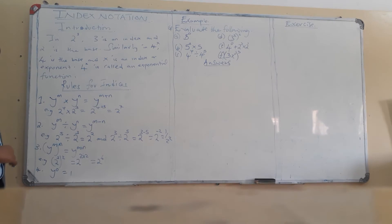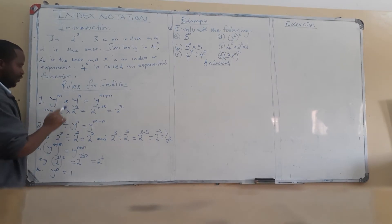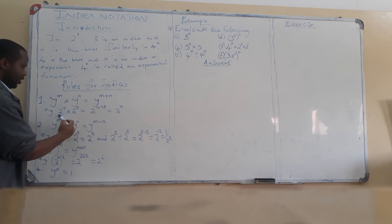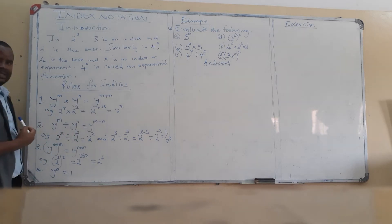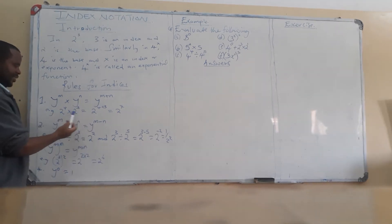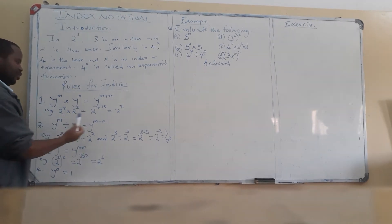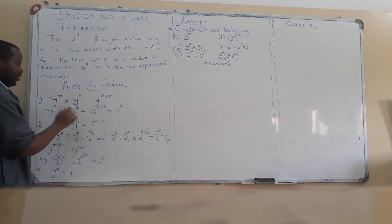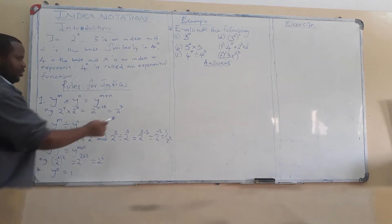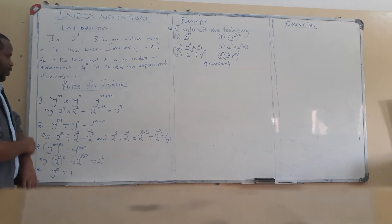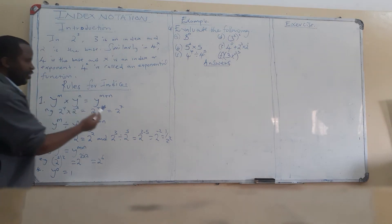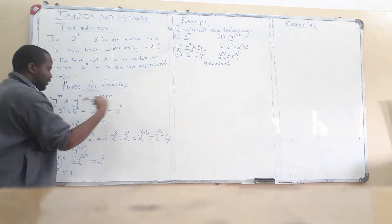For example, if you have 2 to the power 4 multiplied by 2 to the power 3, the base is the same so we maintain the base. Because we are multiplying and the bases are the same, we add the powers: 4 plus 3 is 7, so the answer is 2 to the power 7 if you are expressing in index form.